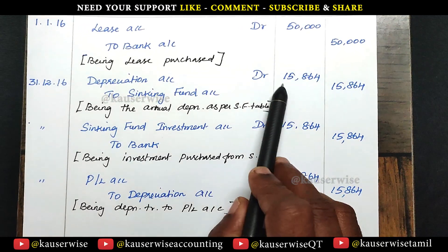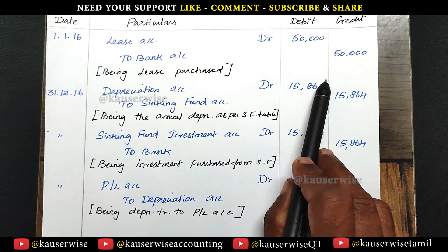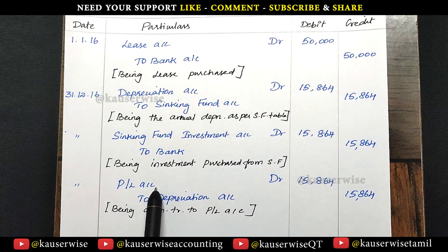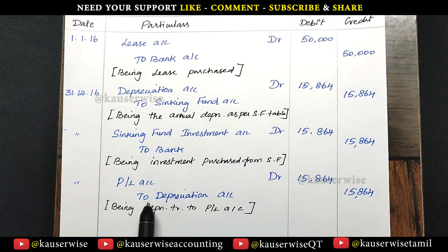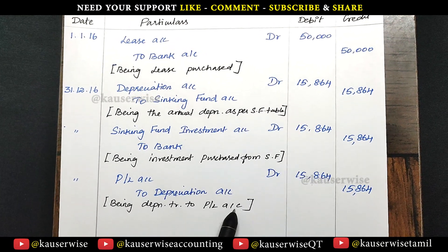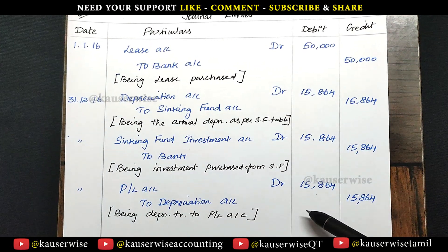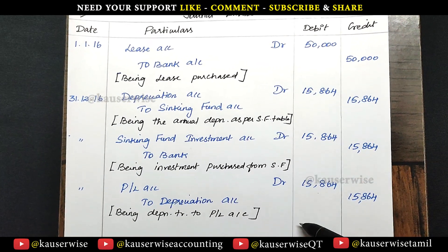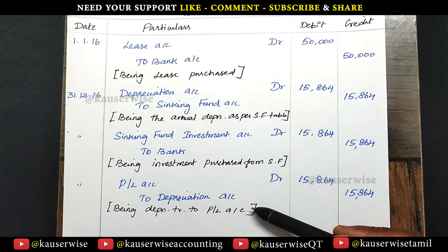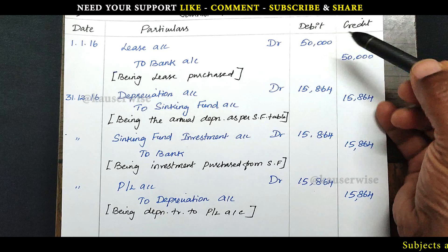And then, on the same day, the amount of depreciation is transferred to profit and loss account. Entry: profit and loss account debit to depreciation account, being depreciation transferred to profit and loss account. So these are the important entries to make at the end of the first year — three entries at year end plus the entry for purchase of lease.